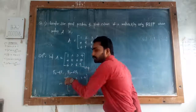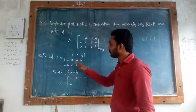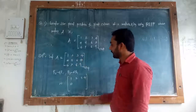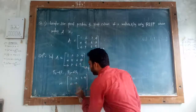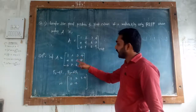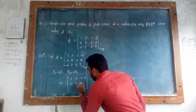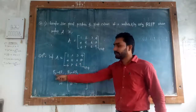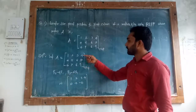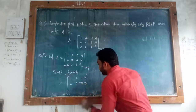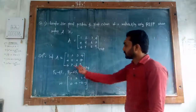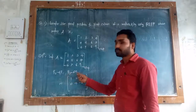Row operation R2 = R2 minus 4 times R1. So 4 minus 4 is 0. R2 second element: 5 minus 4 into 2 is 8, so 5 minus 8 is minus 3. Next: 6 minus 4 into 3 is 12, so 6 minus 12 is minus 6. Then 7 minus 4 into 4 is 16, so 7 minus 16 becomes minus 9.